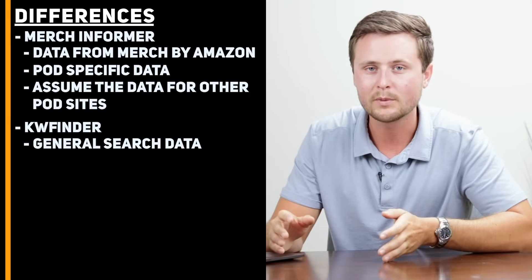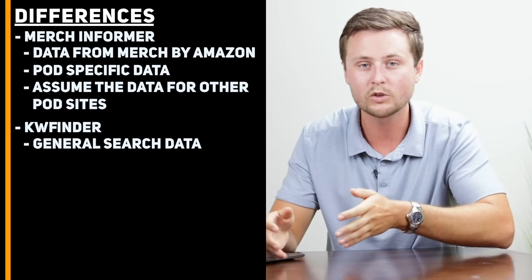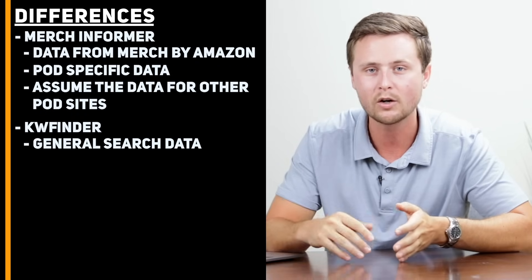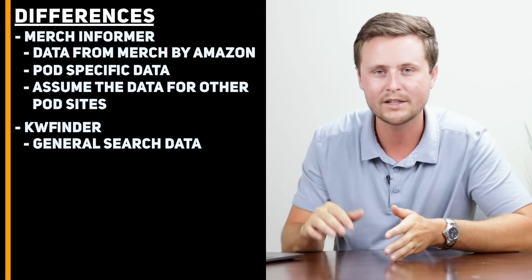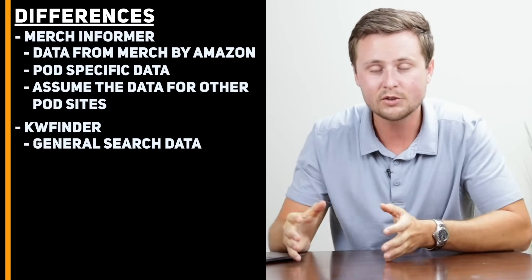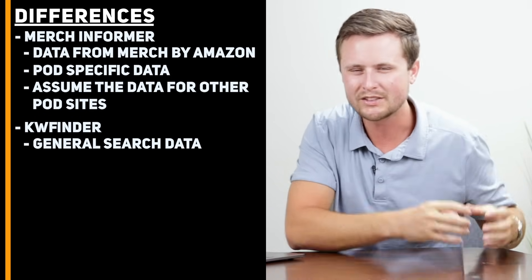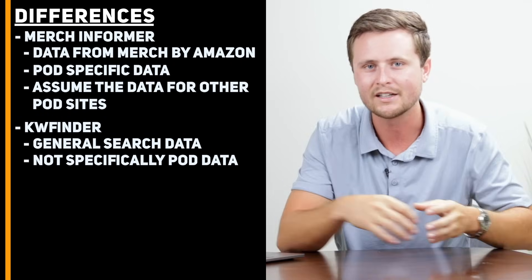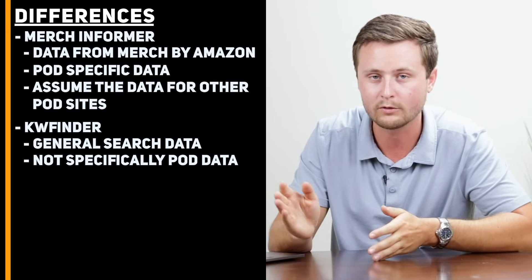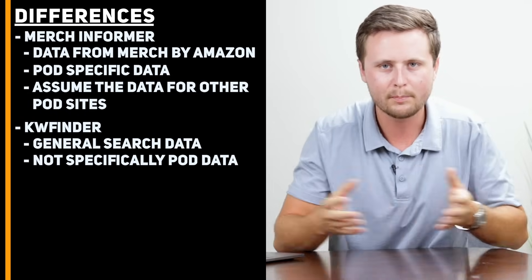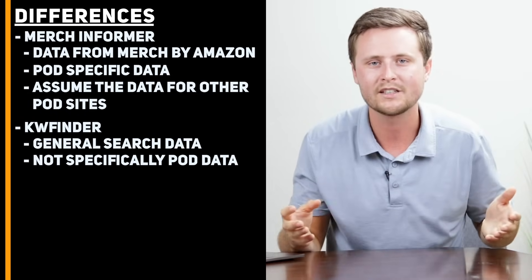It's going to give us good information on what niches are competitive and which ones are not competitive, where we want to go. However, we need to read between the lines and make sure that that information also applies to print-on-demand. Since it's using general search data and not specifically print-on-demand search data, it means that we could have a lot of extra data in there that could be throwing off our results. So with that being said, when you're comparing the two of these on a core functionality level, Merch Informer is going to give you specifically print-on-demand niche research.